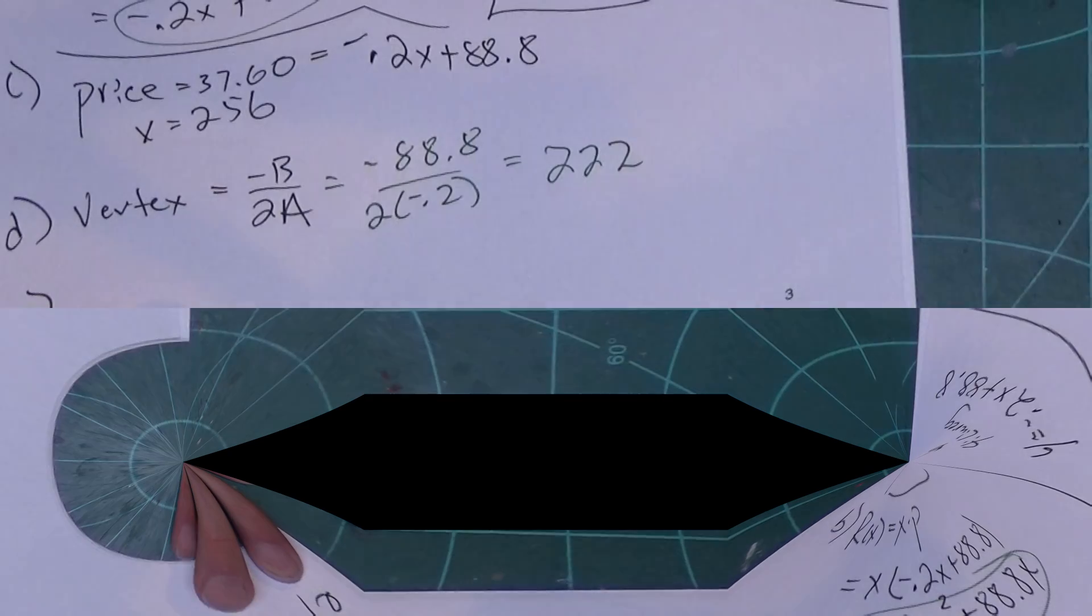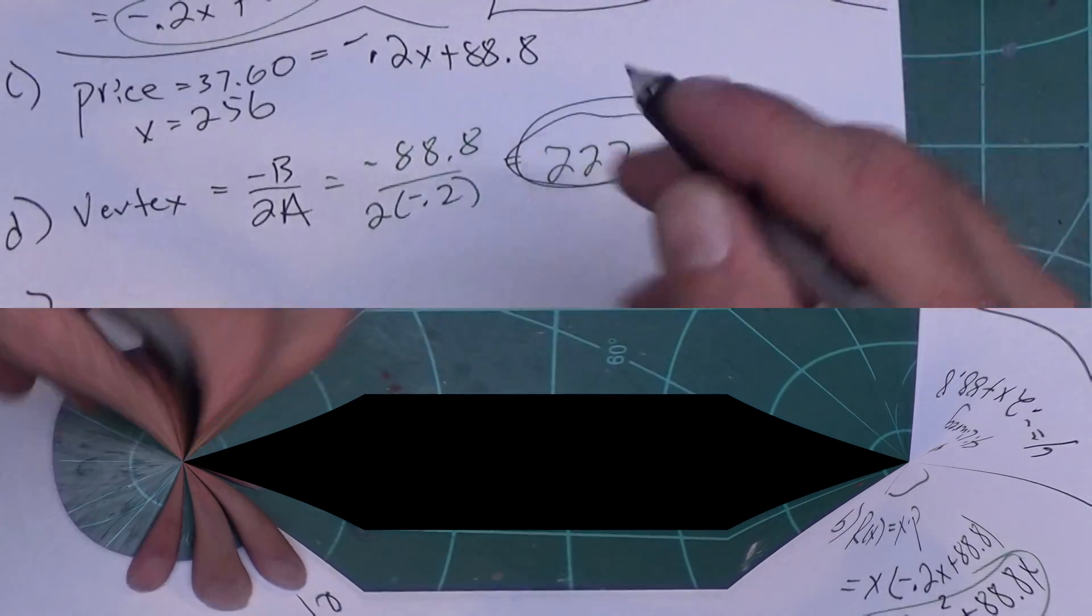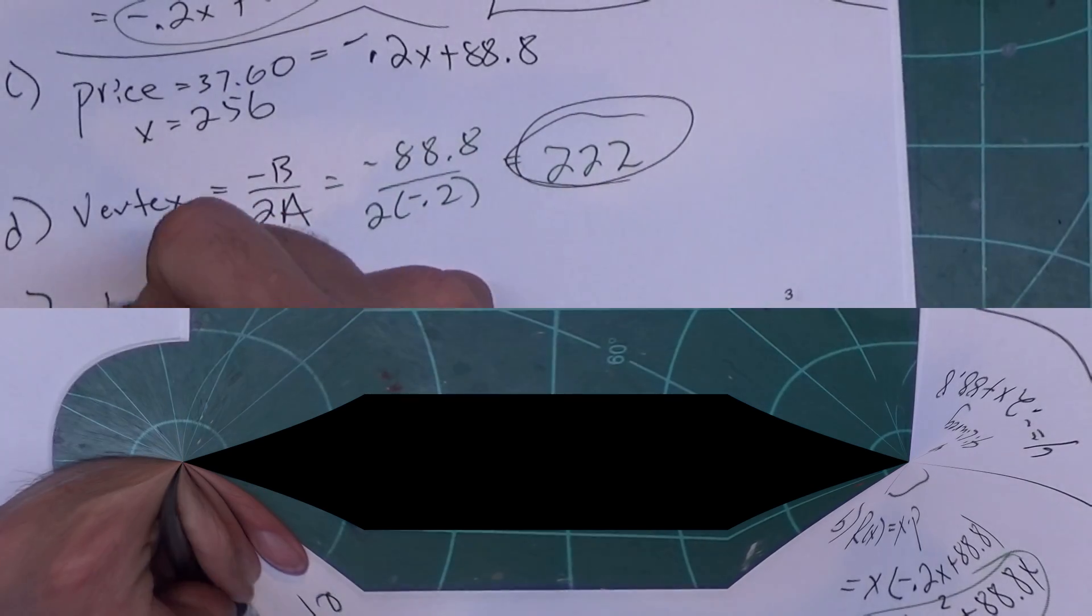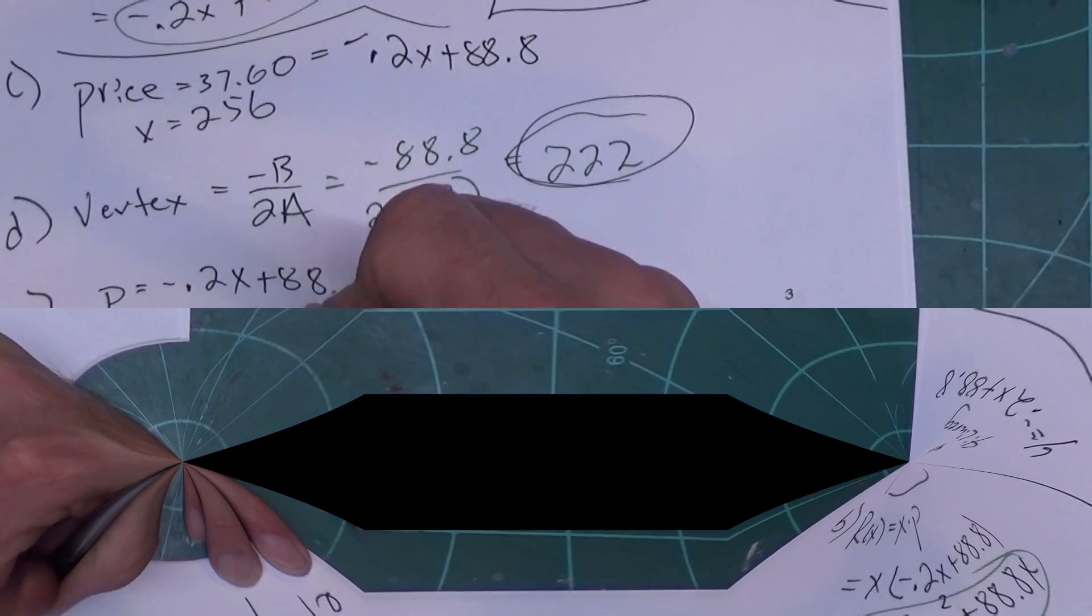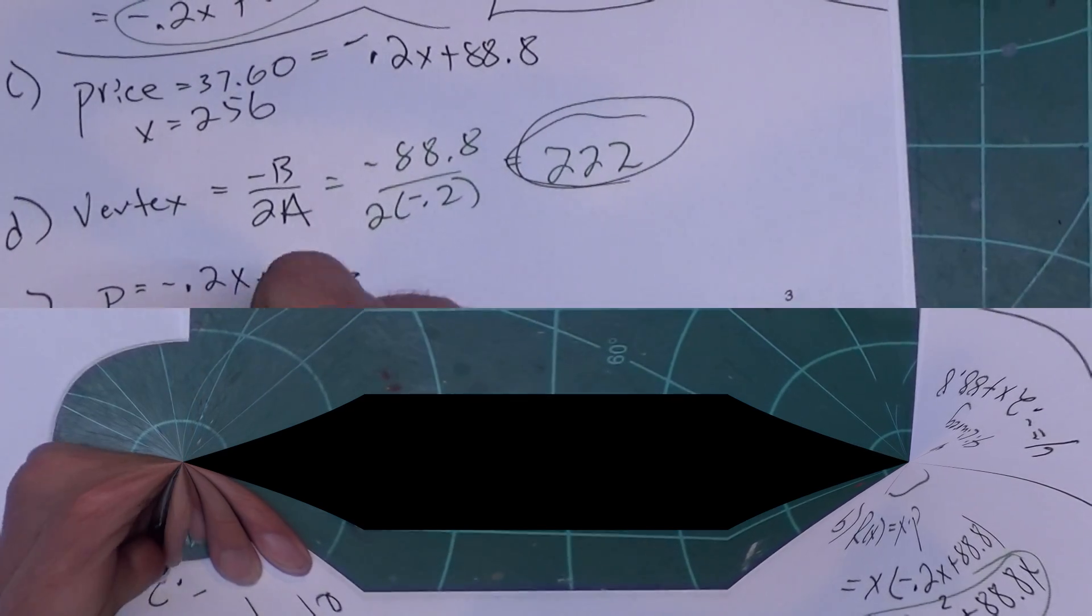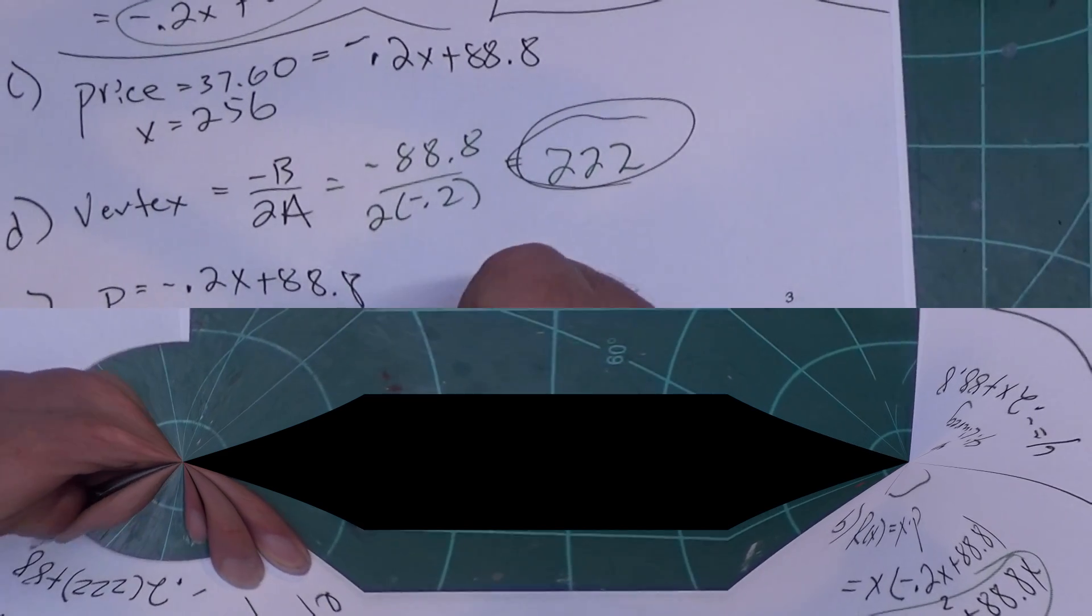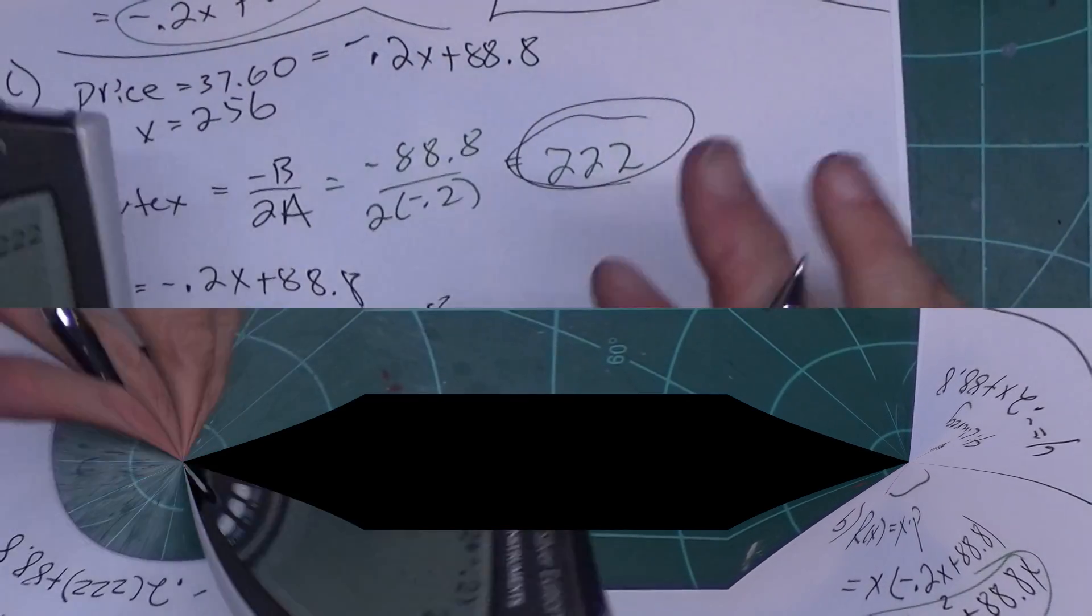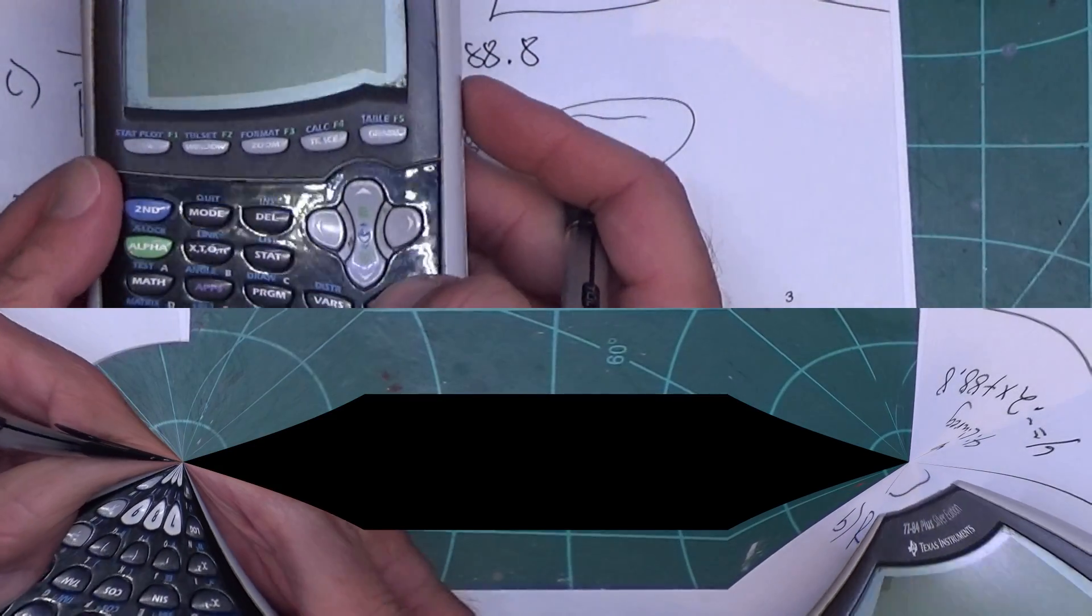Now we're almost done because there's a part E and that's it, and I don't need much room on part E. It says determine the price that will maximize revenue. I'm going to use this number of items right here, and I got to use the revenue equation. Remember that was P equals negative 0.2x plus 88.8, and all we want to do is plug that in for x, so it would be 0.2 times 222 plus 88.8.